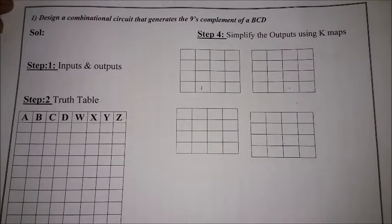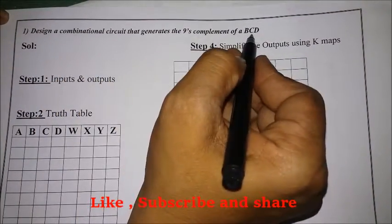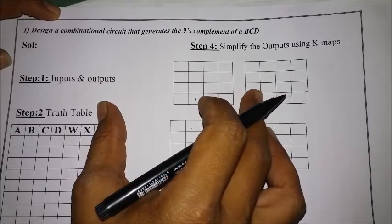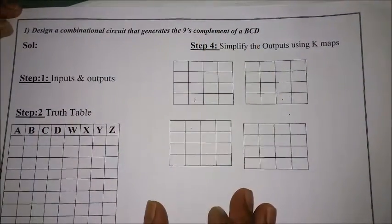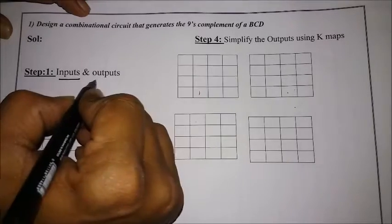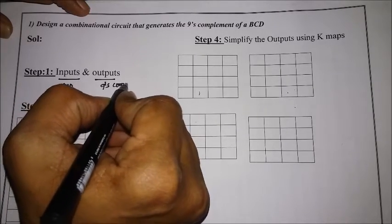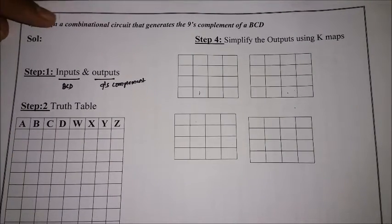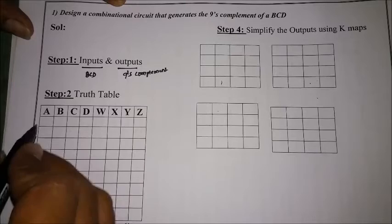We will proceed with two examples. The first example: design a combinational circuit that generates the 9th complement of BCD. What does generation of the 9th complement of BCD mean? The circuit we are going to design should take BCD as input and give the 9th complement as output. So the inputs are the BCD code and the output is the 9th complement of the BCD.